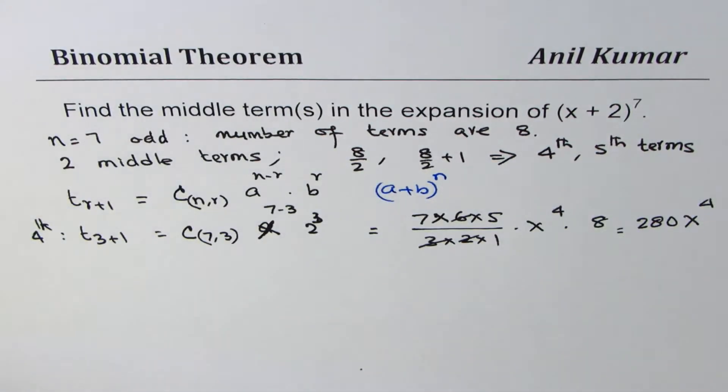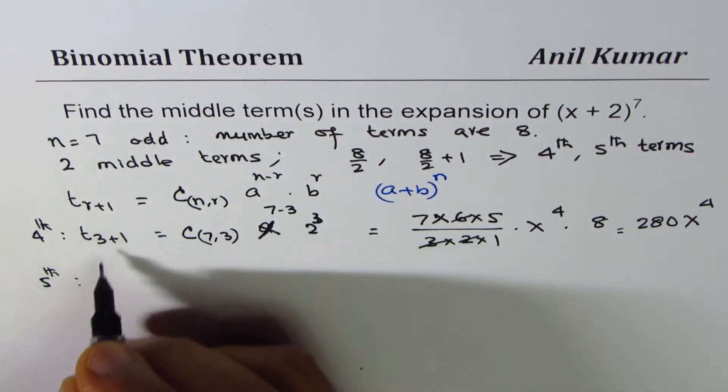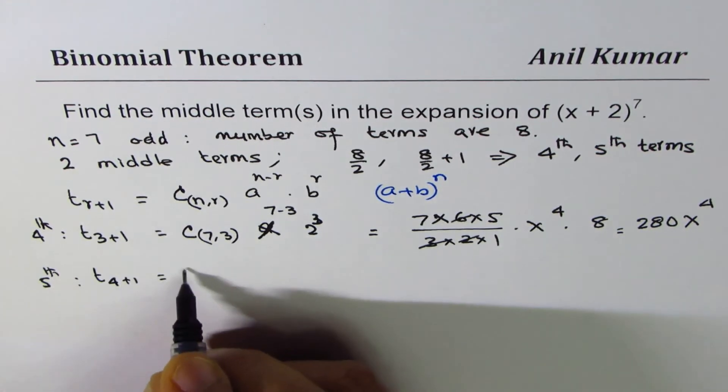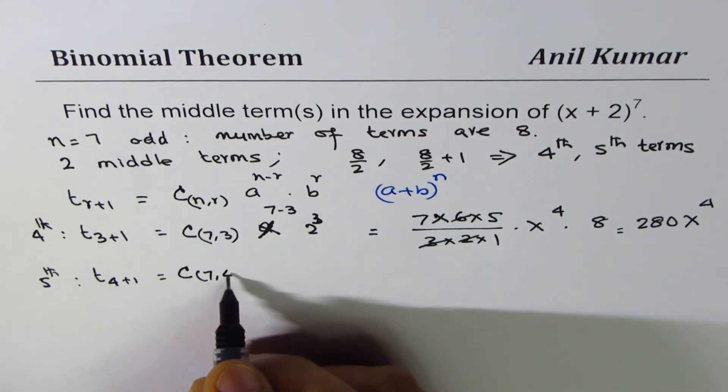Well from symmetry you can actually get the other term also but we'll still calculate. So the 5th term is T_4+1 which is 7C4, R is 4.